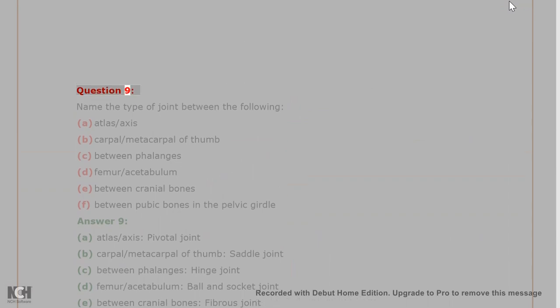Question 9. Name the type of joint between the following. A. Atlas/axis. B. Carpal/metacarpal of thumb. C. Between phalanges. D. Femur/acetabulum. E. Between cranial bones. F. Between pubic bones in the pelvic girdle.